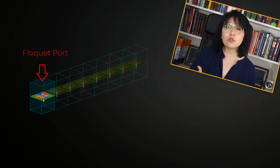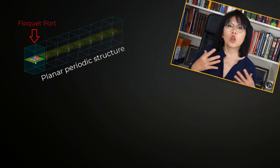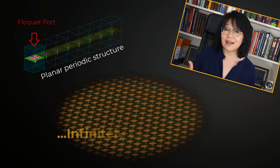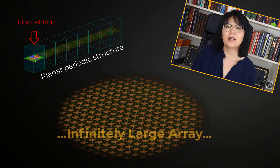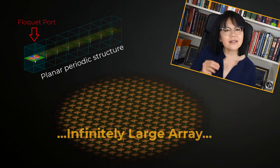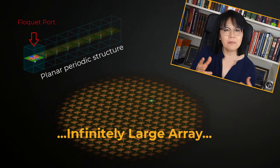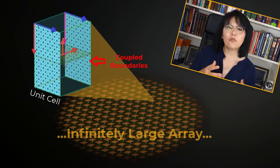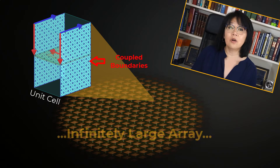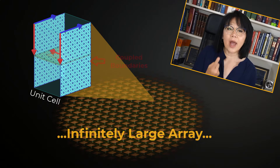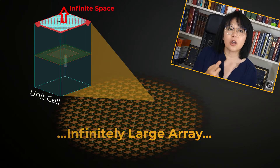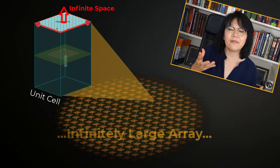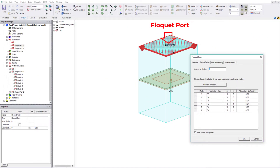The Floquet port in HFSS is used exclusively with planar periodic structures — large arrays which can be idealized as infinitely large. The analysis of the infinite structure begins by analyzing a unit cell. Coupled boundaries form the side walls of the unit cell, with at least one open condition representing the boundary to infinite space required.